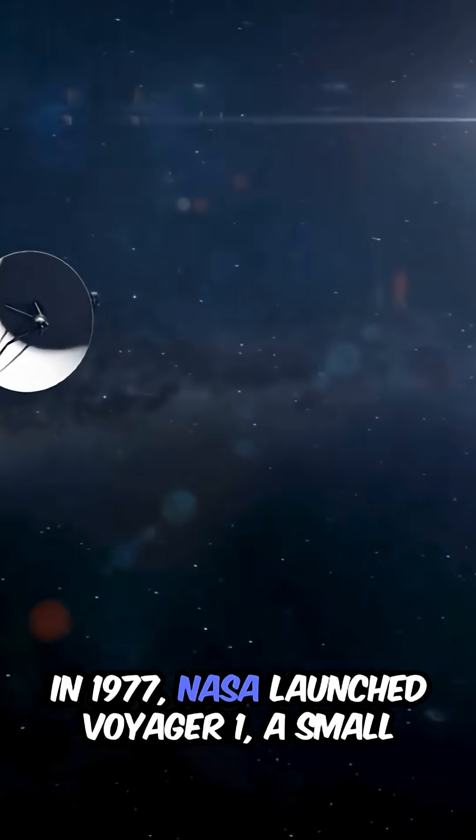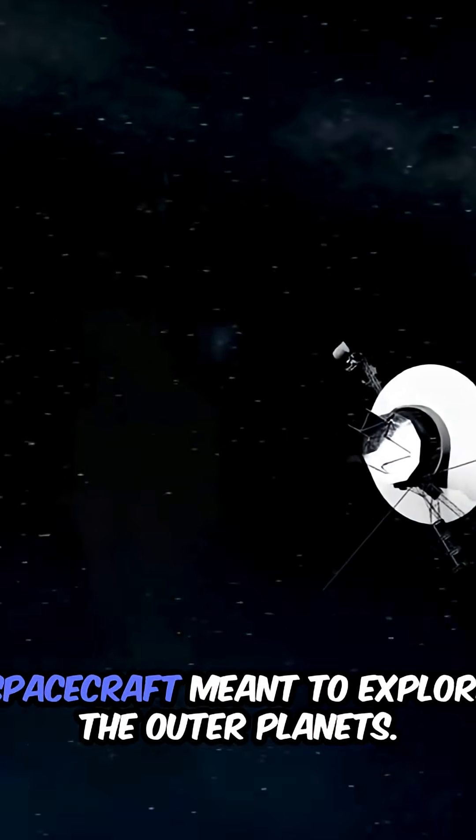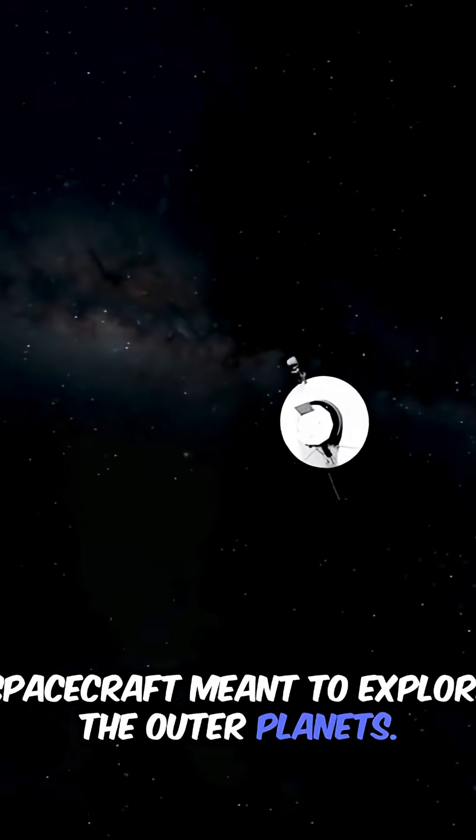In 1977, NASA launched Voyager 1, a small spacecraft meant to explore the outer planets.